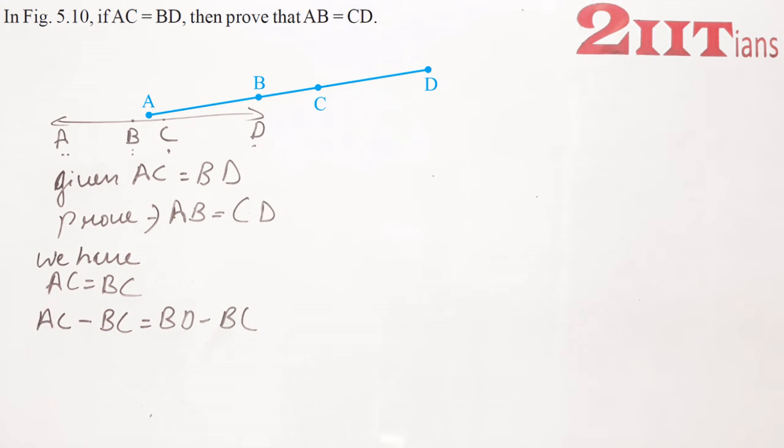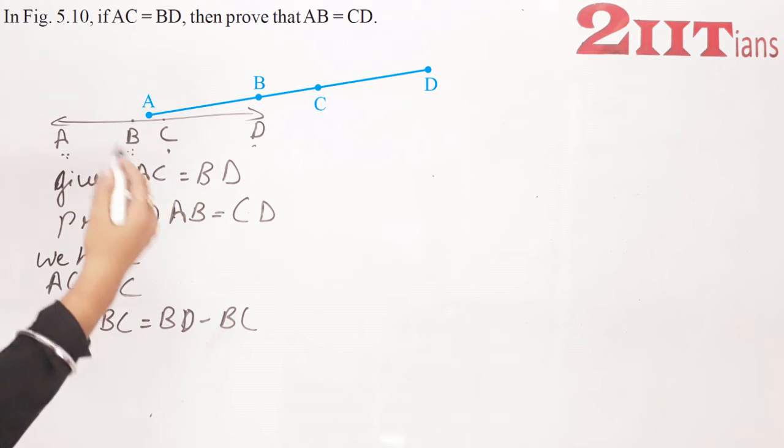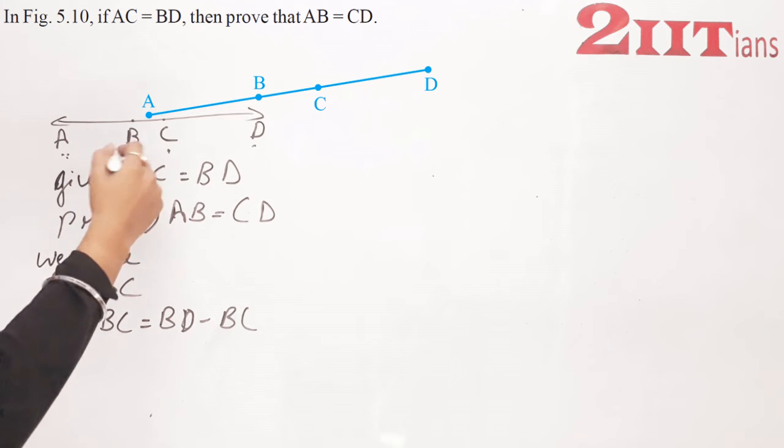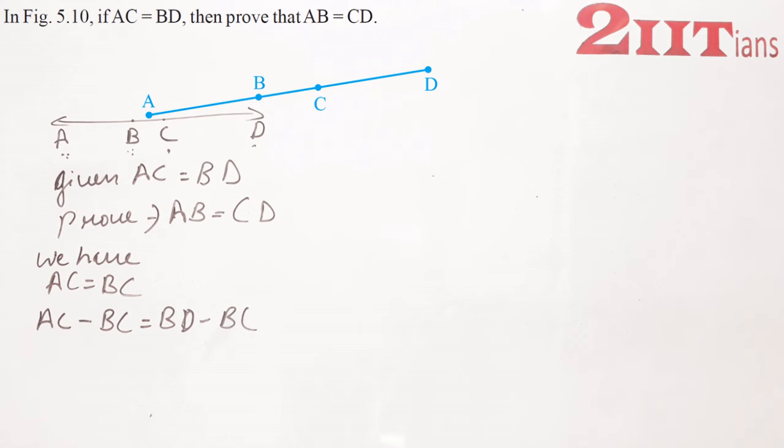यह एकदम सही बात लिखी है. AC minus BC equals to BD minus BC. BC का distance इकदम है हमारा.